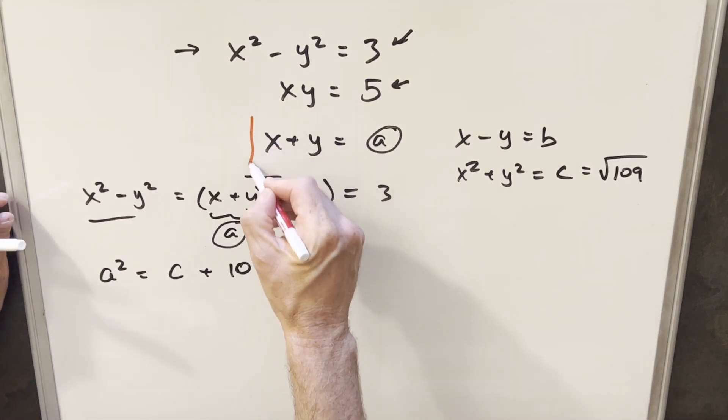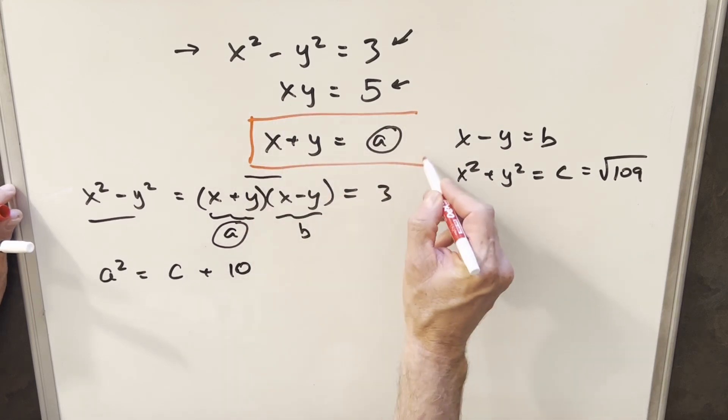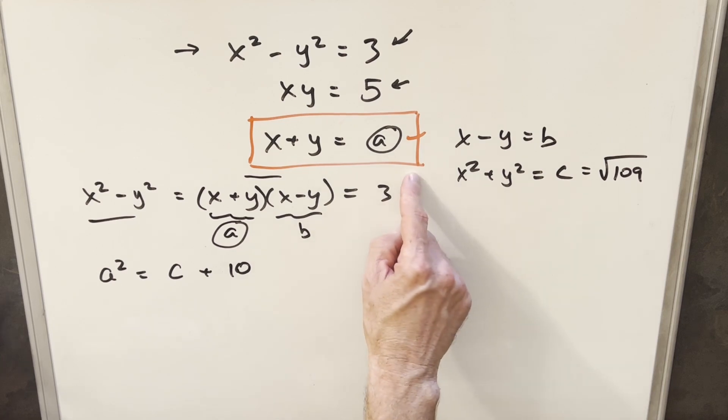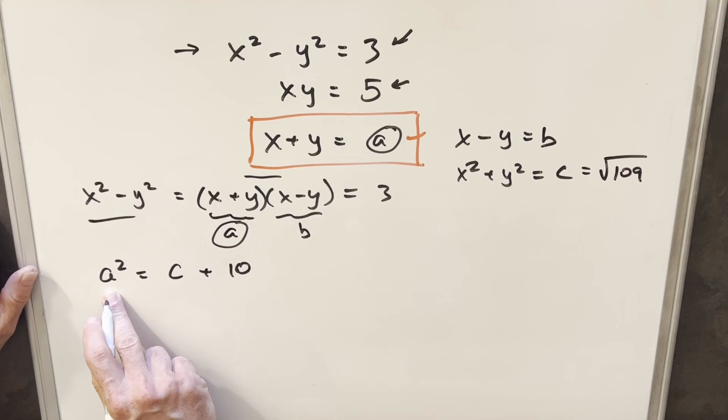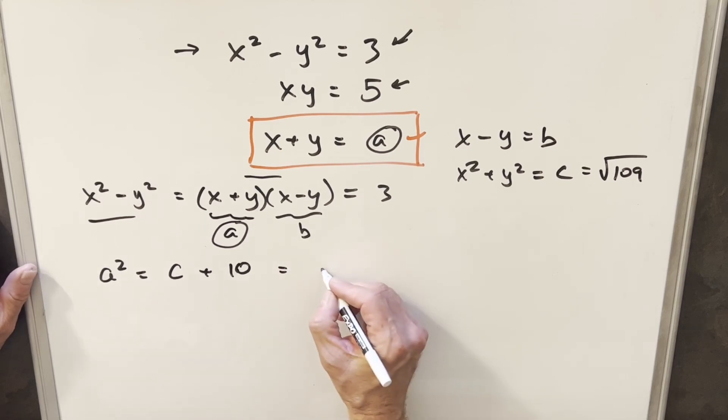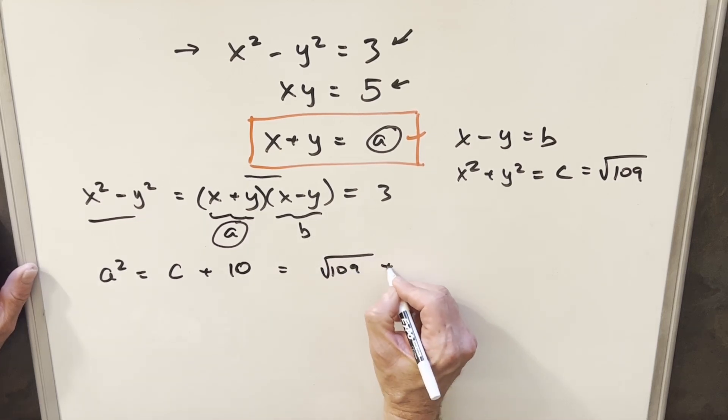Then from here, what I want to do is just go back and recall our goal. We just wanted to find x plus y, and that's the same as our a value right here. And this isn't too bad at all, because we have a value for a squared, and we have a value for c now. So we can update our value here for a squared and write this as square root of 109 plus 10.